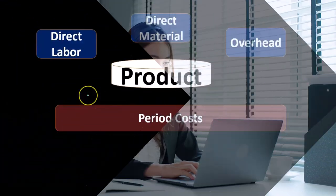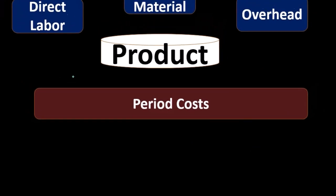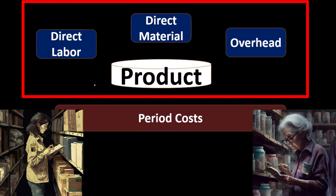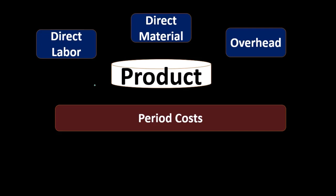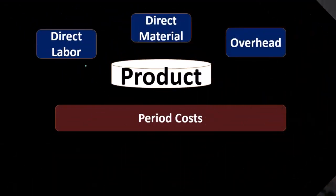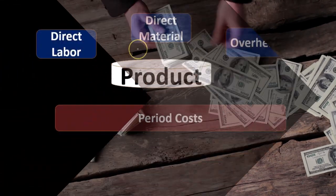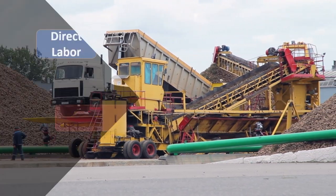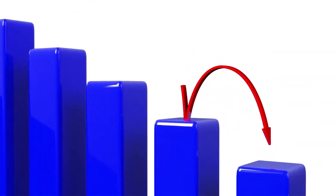Then we have period costs. Period costs are typically things that are not going to be part of production — not part of the inventory. The production costs — direct labor, direct materials, and overhead — are costs that we use to create the product, and therefore they're going to be capitalized when we use them. This may seem unusual if you're used to a service company. When we pay wages, we're used to recording wages expense, but here we're going to put it as part of the inventory asset. Similarly, materials become an asset rather than an expense, and depreciation gets capitalized as part of the product rather than recorded as depreciation expense. We expense it when we sell the product.